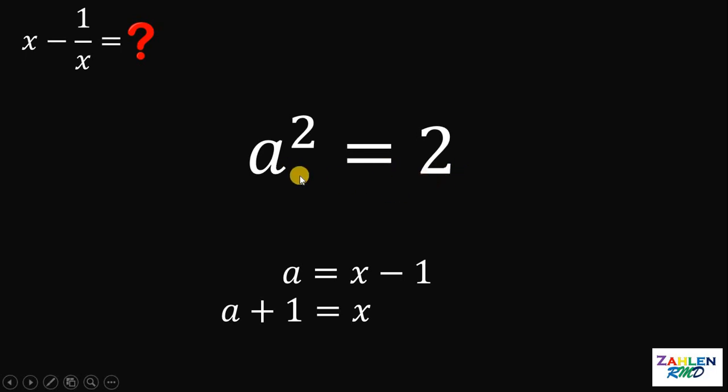And instead of solving for the value of a, what we're going to do is to use this equation a equals x minus 1. Now, let's square on both sides to get the value of a squared. So, x minus 1 quantity squared is equivalent to x squared minus 2x plus 1.